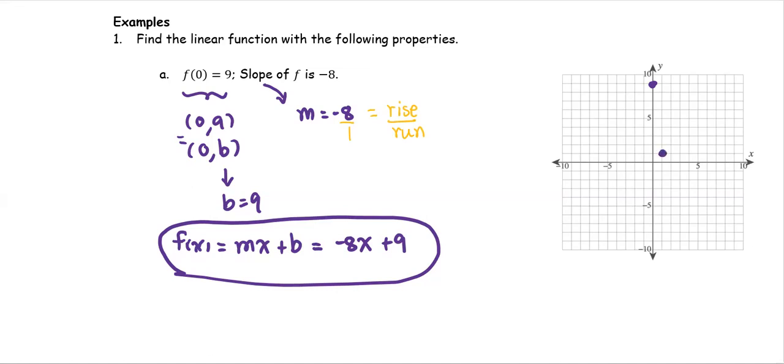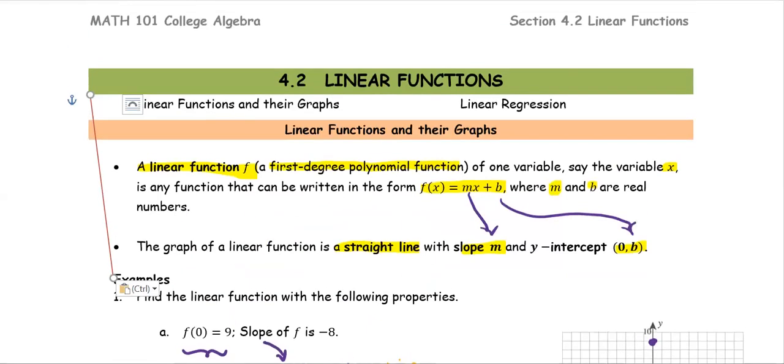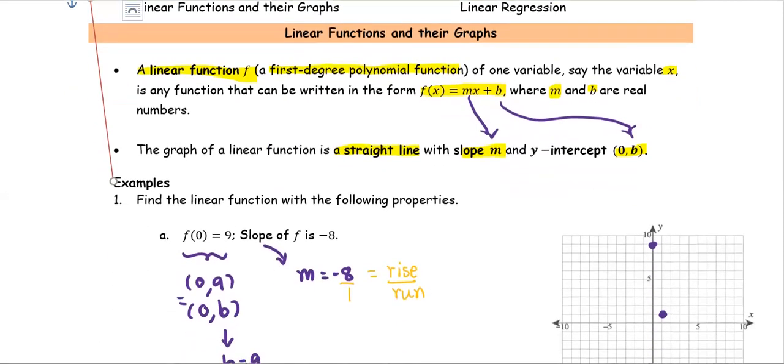Therefore, we get 2 points located on the same line, and then we're going to use the line to connect these 2 points together to form the straight line or the graph of this linear function in part a.